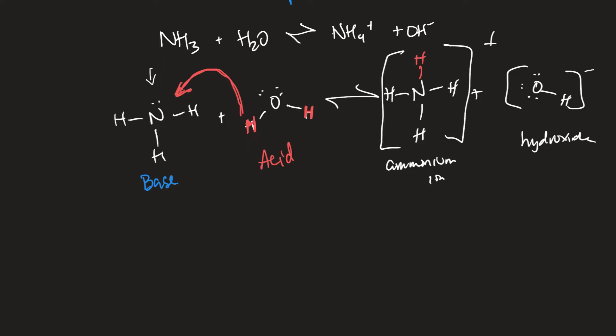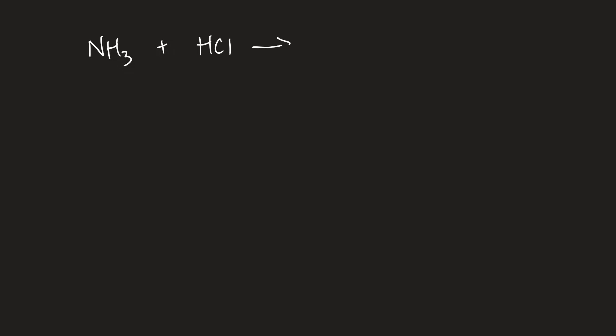Bronsted-Lowry acid-base reactions don't need to take place in water — that's the biggest difference from Arrhenius definitions, which must occur in aqueous solution. As an example, NH3 reacts with HCl to produce NH4+ plus Cl-. You can draw a Lewis structure to visualize what's happening, but it's also possible to identify the acid and base without one.